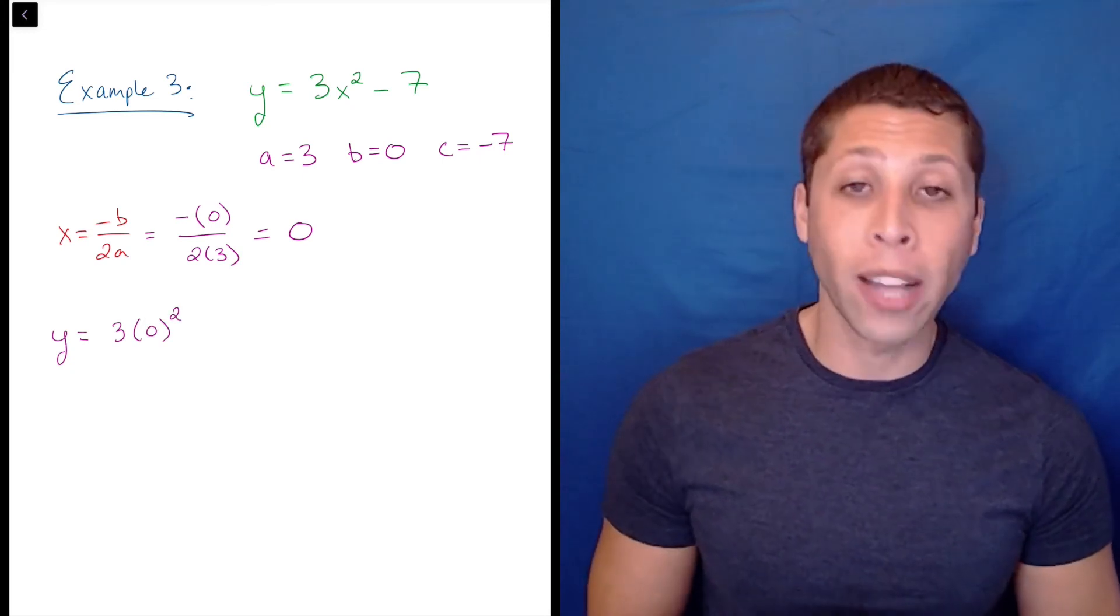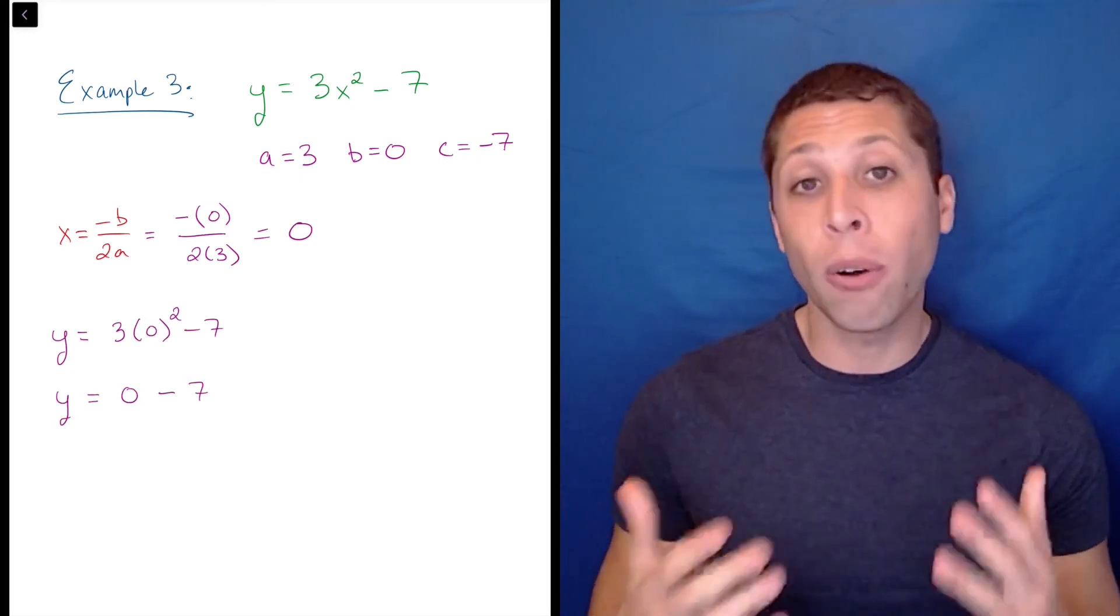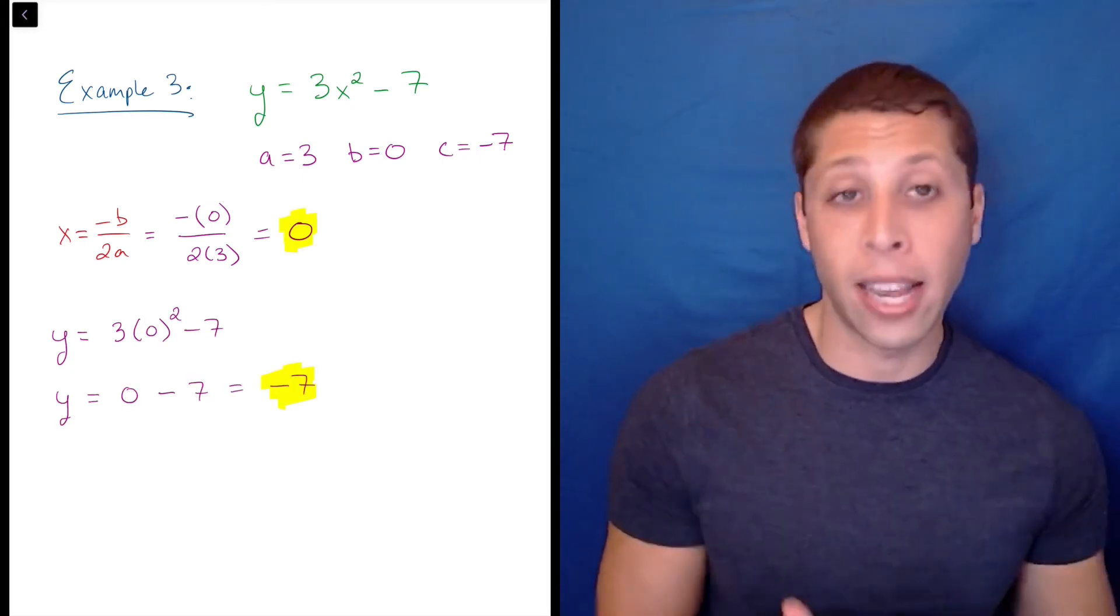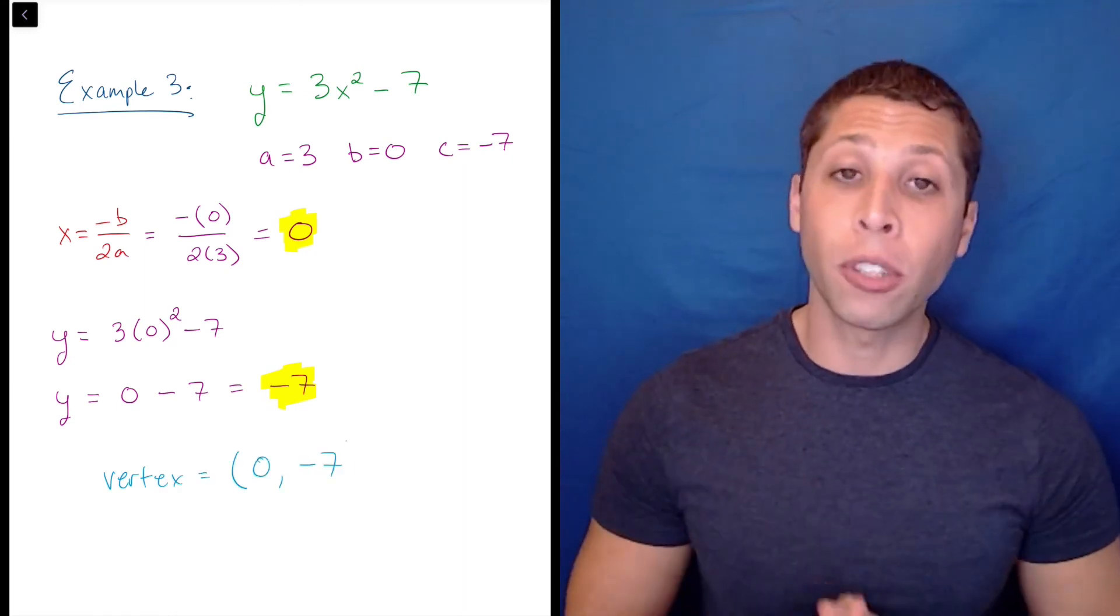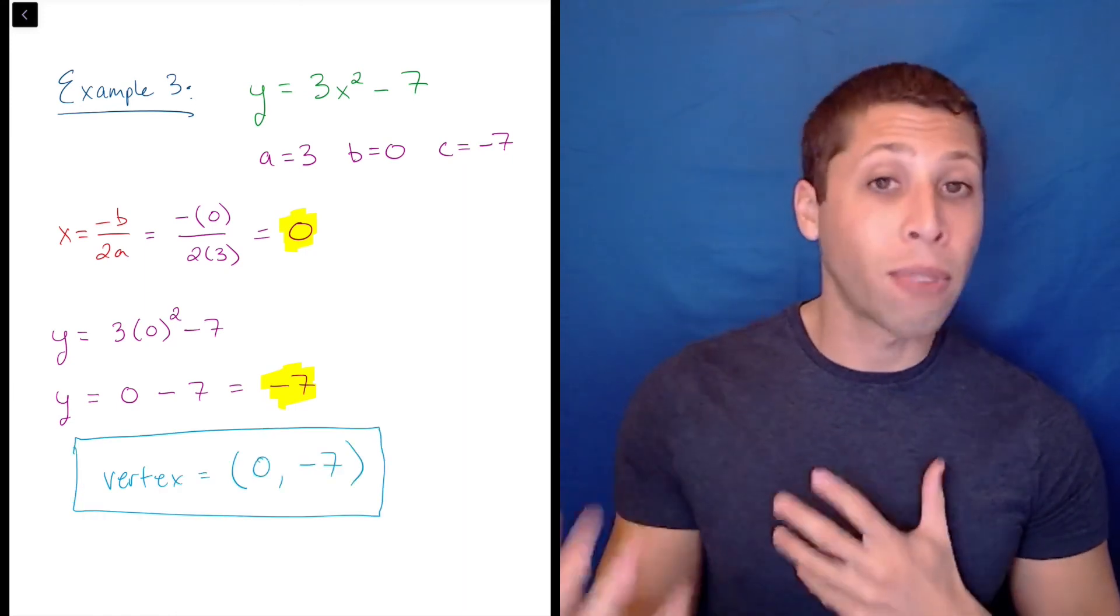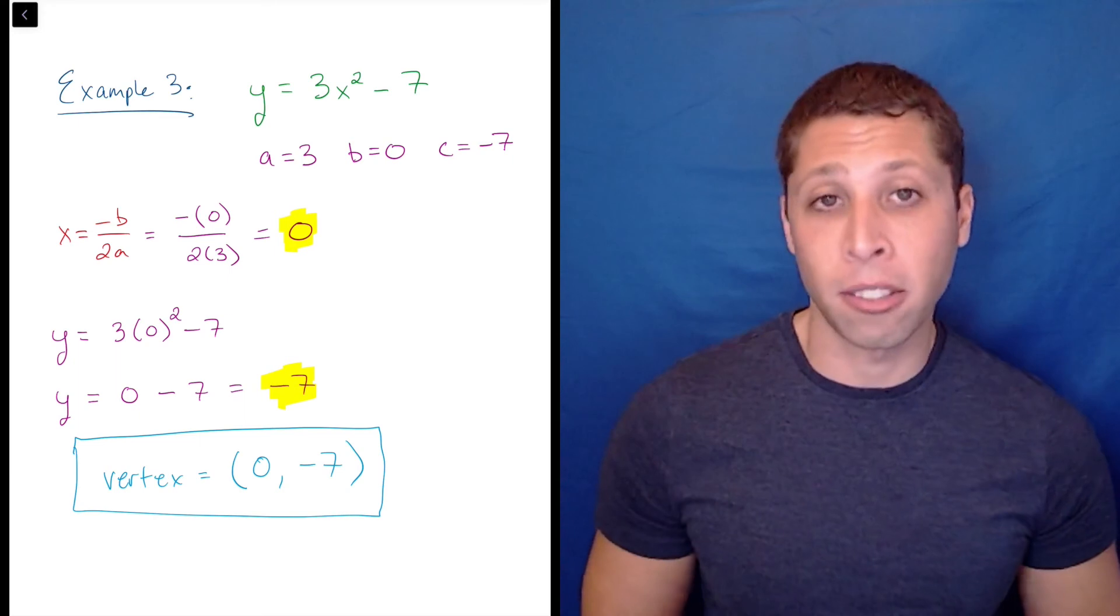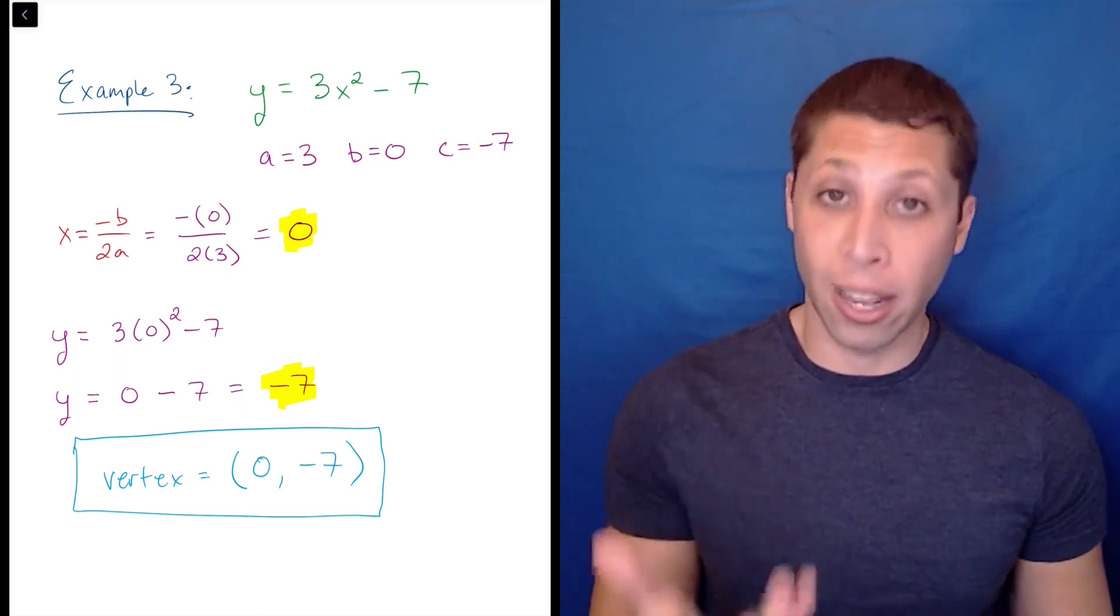And then it's easy to find that the y coordinate is negative 7, so the vertex is 0, negative 7. Finding the vertex will be more tedious if you have fractions or decimals, but the process will be the same. Stay organized and trust the process.